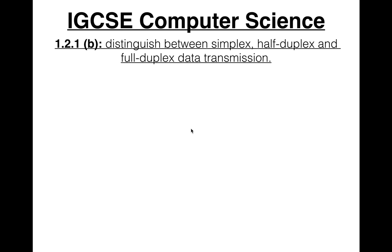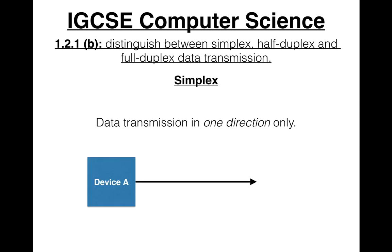Let's start with simplex. Simplex data transmission is data transmission in one direction only. Here's a diagram of that. Device A can send data to device B, but device B can't send data to device A. This is the sender, this is the receiver. Basically only one direction.